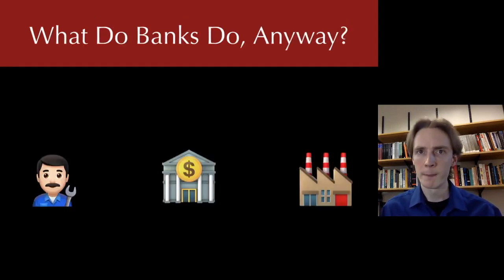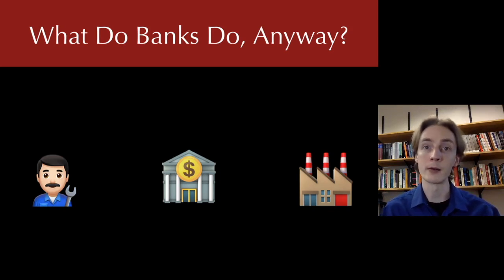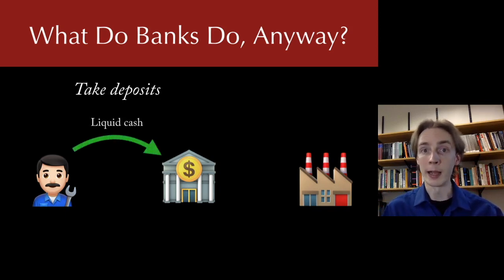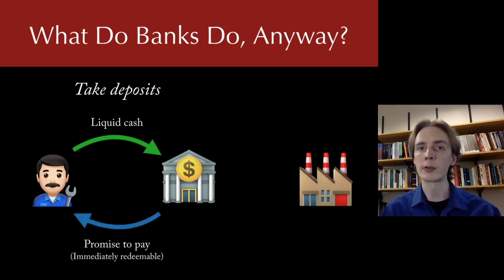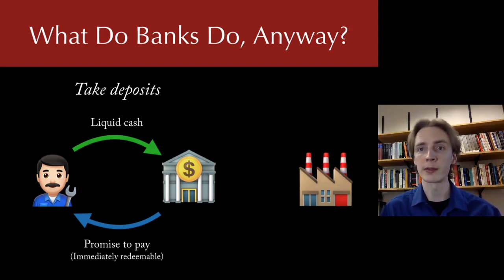Let's take a step back and think about what exactly banks do. From our perspective, our interactions with a bank are only about half of what banks generally do. Banks serve two functions. First, they take deposits — that's how you and I generally interact with banks. We deposit liquid cash, we deposit M0, and we get back bank promises — a bank account with deposit balances. Those are the bank's promises to pay, and they're immediately redeemable. There's a reason they're called demand deposits: whenever you demand, you can walk into that bank and get your cash back.